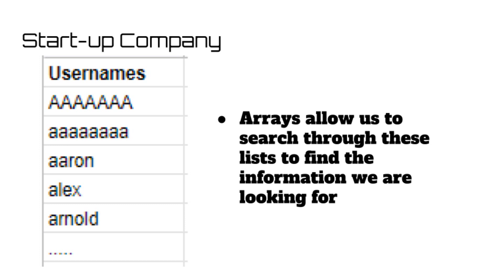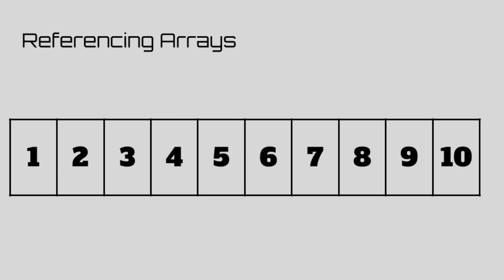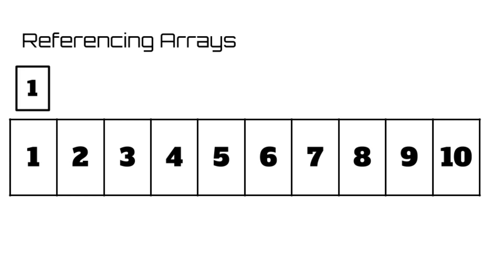The most important thing to note about arrays is how you reference each variable within them. Let's create a basic array called numbers — inside of it, put the digits one through ten. Now how we refer to each cell in the array is called that cell's index.